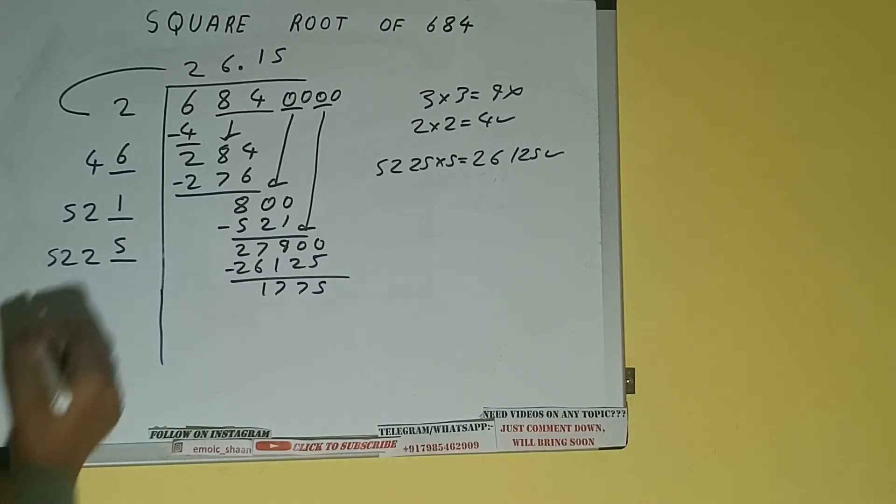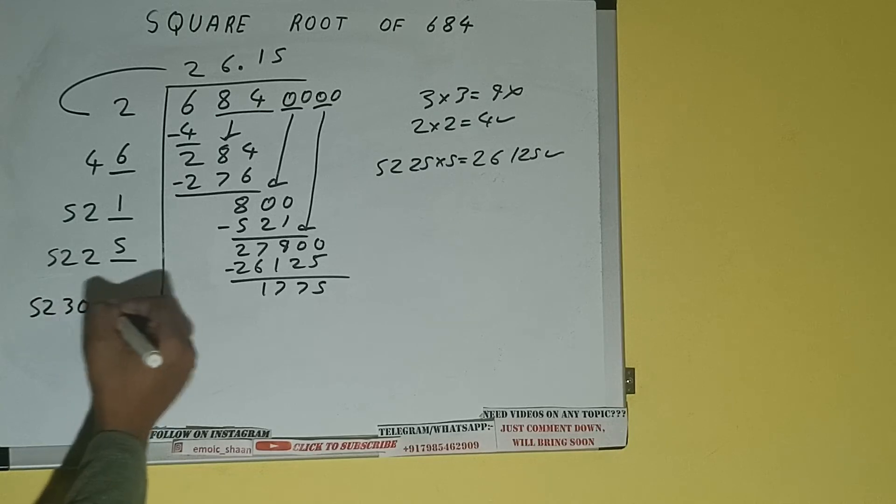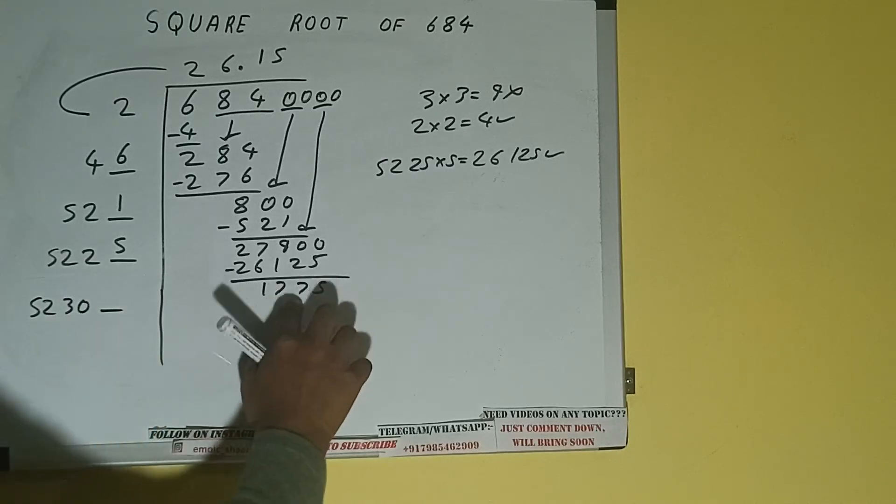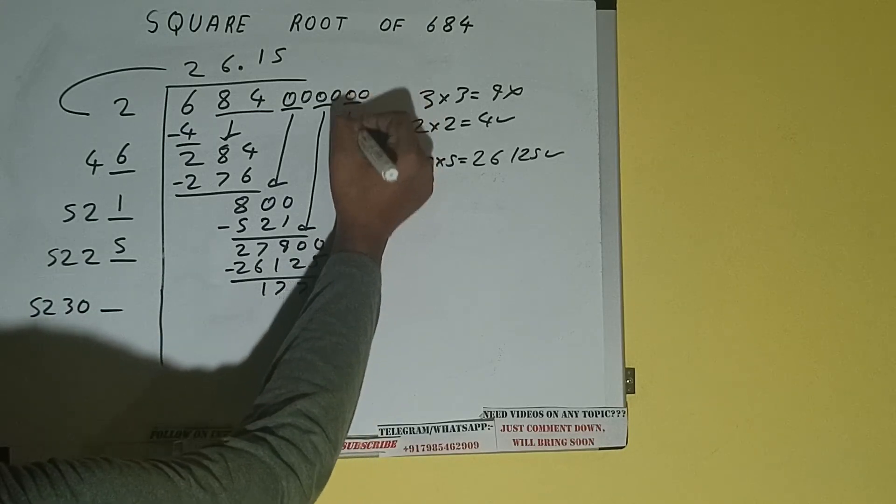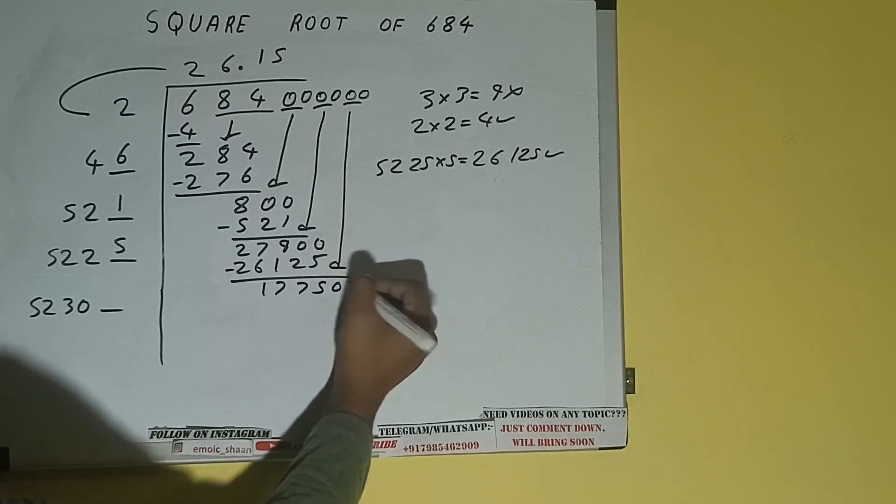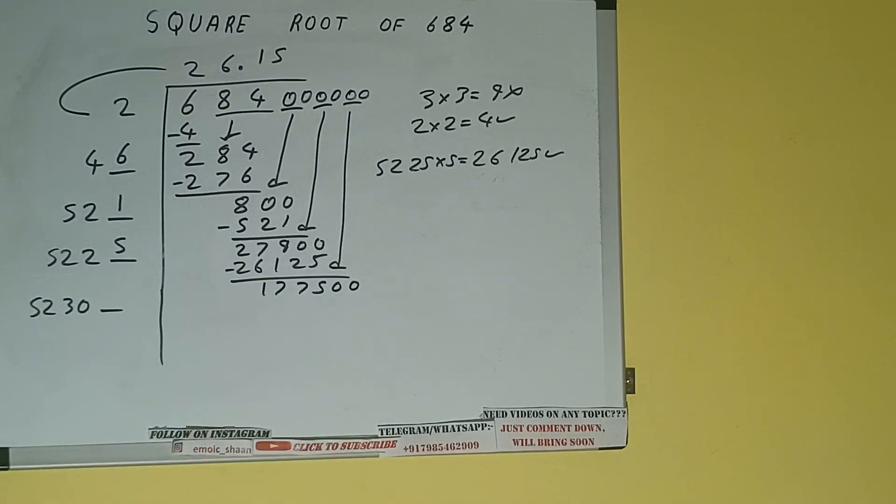So 5225 plus 5 will be 5230, and 1 digit extra. And this number we need to make it big. So bring the next pair of zeros down, and it will be 177,500. Compare this 52 and 177, so 52 three times is 156.